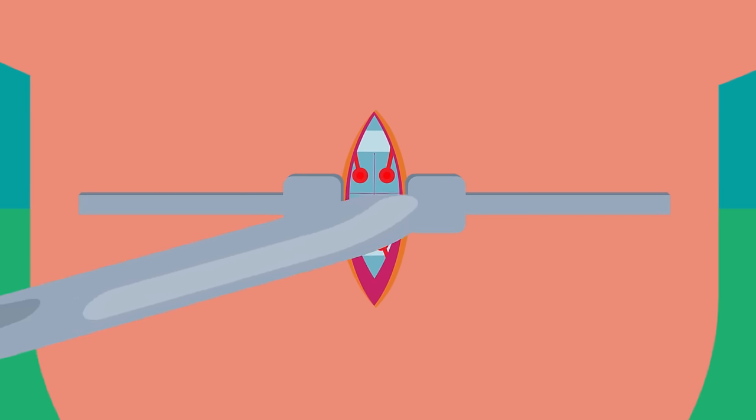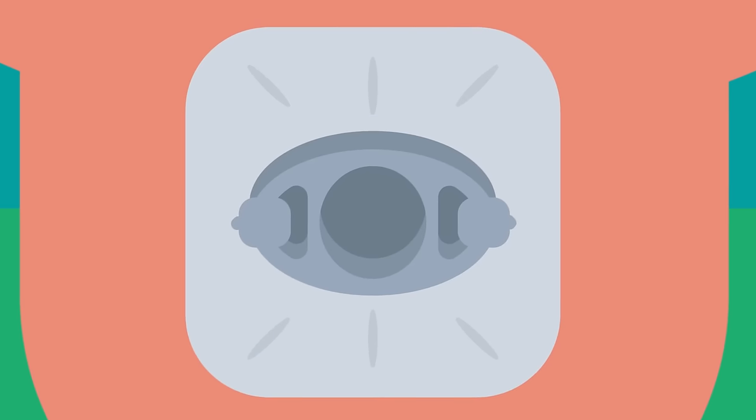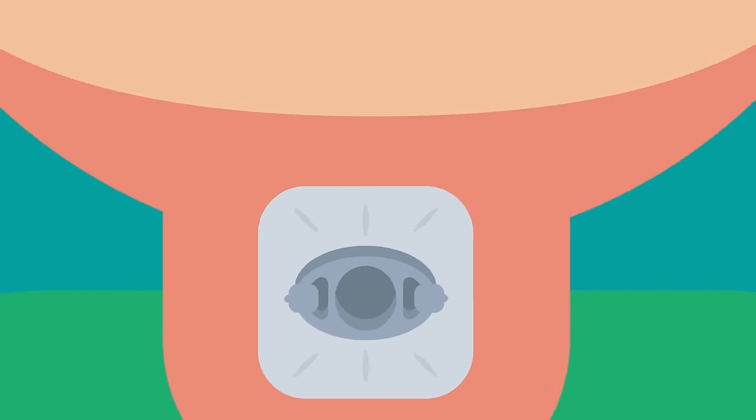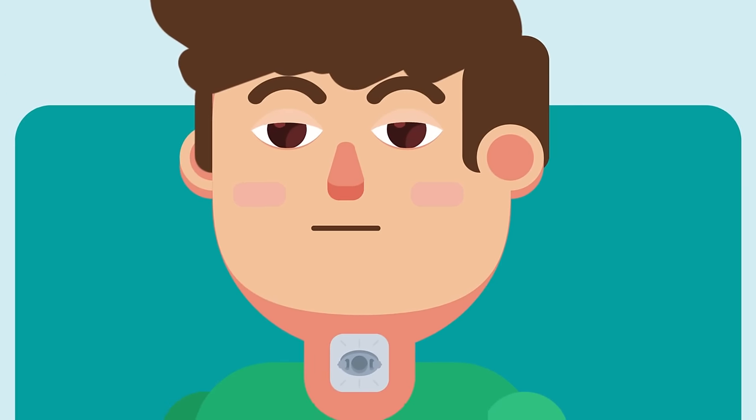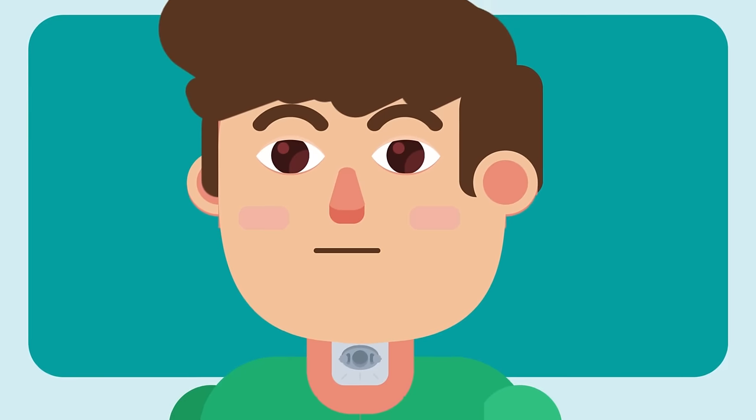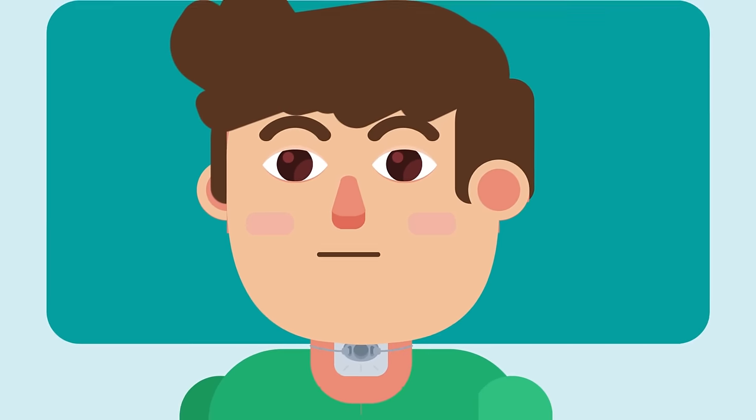Incision is given on the trachea. A hole is made and the tracheostomy tube is inserted, preferably through the second or third tracheal ring. The skin incision is closed and the tracheostomy tube is secured to the skin via stitches or simply tied around the neck.